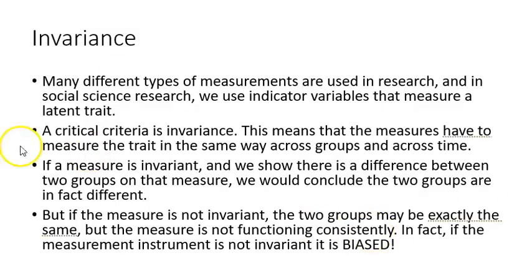There are many different types of measurements used in research and social science, and we use indicator variables that measure a latent trait. You have probably done this many times — a survey with five questions on one particular factor and five on another. Those five are the indicator variables. A critical criterion is invariance, which means the measures have to measure the trait in the same way across groups and time. If a measure is invariant and research shows a difference between two groups, we can conclude the groups are actually different. But if the measure is not invariant, the two groups may be exactly the same but the measure is not functioning consistently — it is biased, and if you use a biased instrument, your results are also biased.